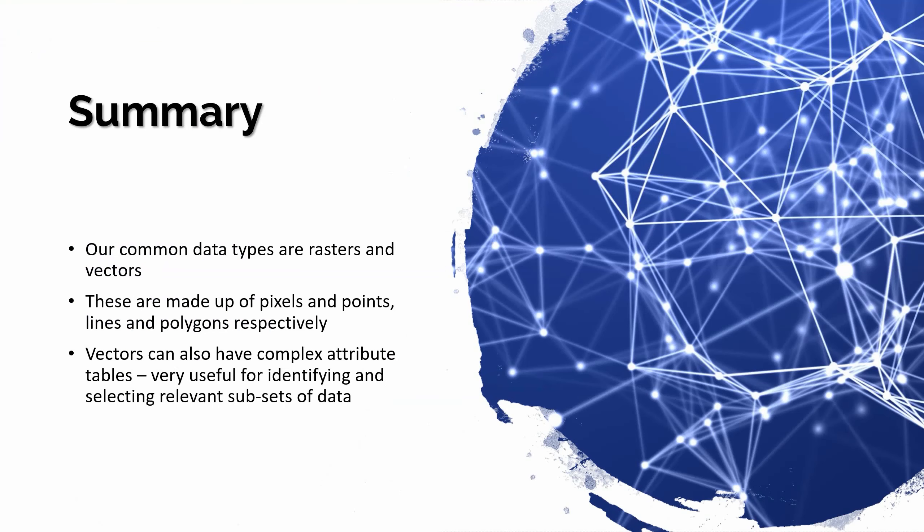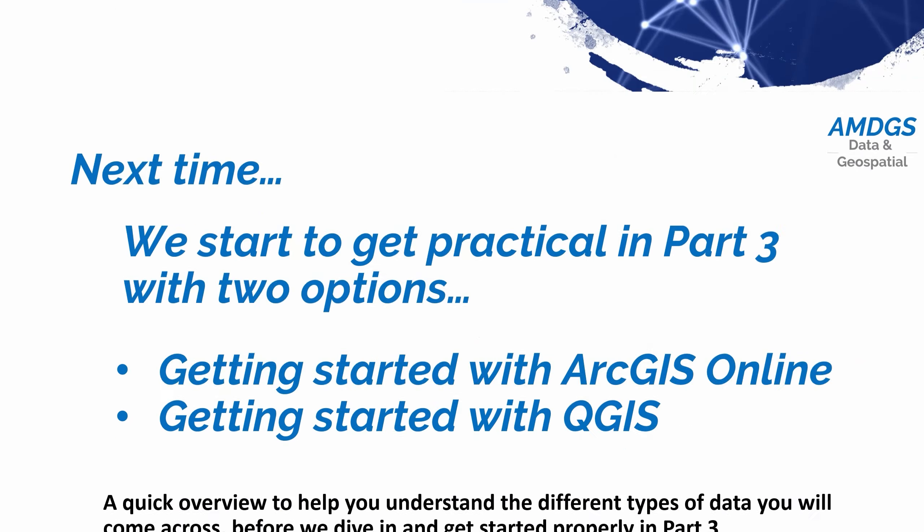Hopefully that has given you a brief overview of these main GIS data types. We don't really need to worry about much beyond rasters and vectors. Until you start using them it probably is still a little bit fuzzy as to exactly what they do, what they look like, how we use them — but don't worry, because that's exactly what I'm going to get onto next time. I just think it's useful to have a little bit of theory in mind before we start getting our hands dirty with the practical stuff.